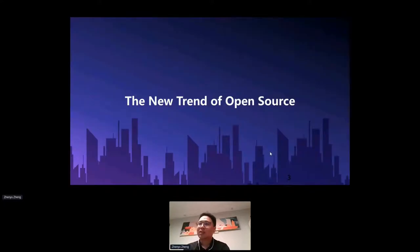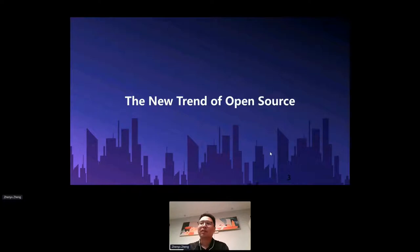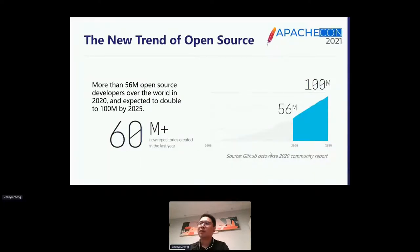Let's get into the first part: the new trend of open source. We will take a closer look at the community report released by GitHub for the year 2020. Since GitHub is one of the most popular software hosting and development platforms, their data on open source developers greatly reflects overall contributor standards and trends. According to GitHub's community report for 2020, released in the second quarter of this year, there are more than 56 million open source developers across the world, and the number has grown rapidly, especially in the past few years.